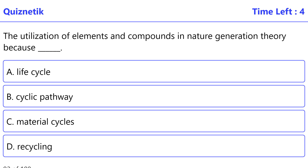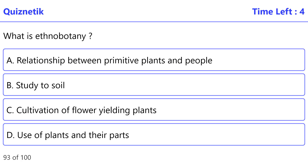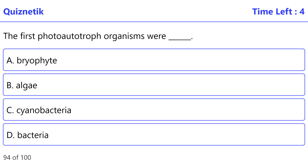Utilization of elements and compounds in nature supports regeneration theory because — correct option is C — material cycles. What is ethnobotany? Correct option is A — the relationship between primitive plants and people.